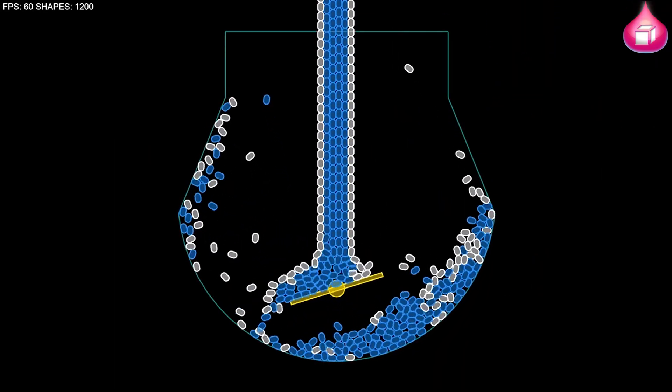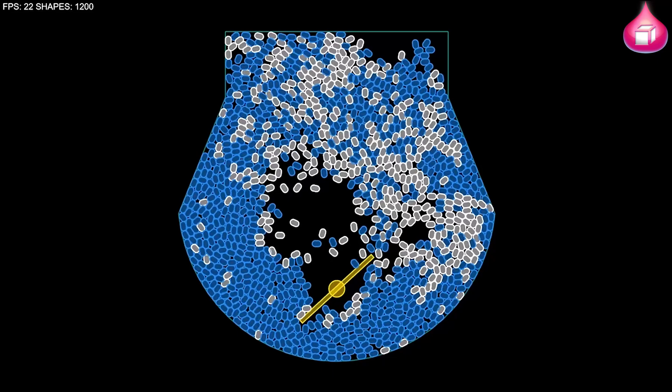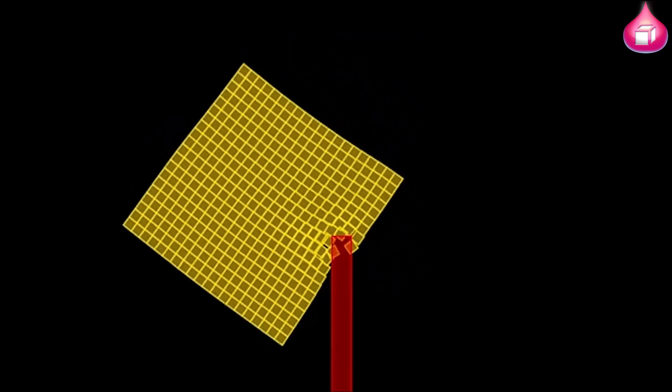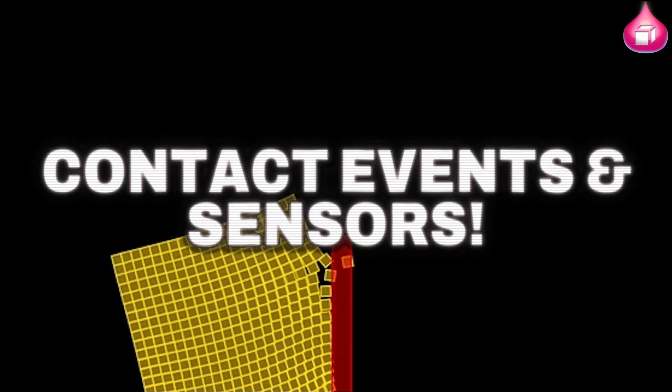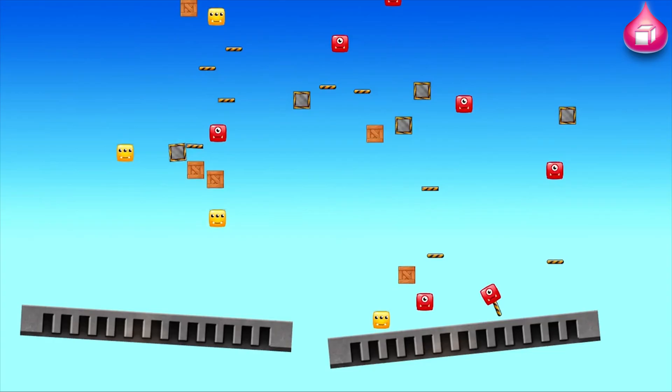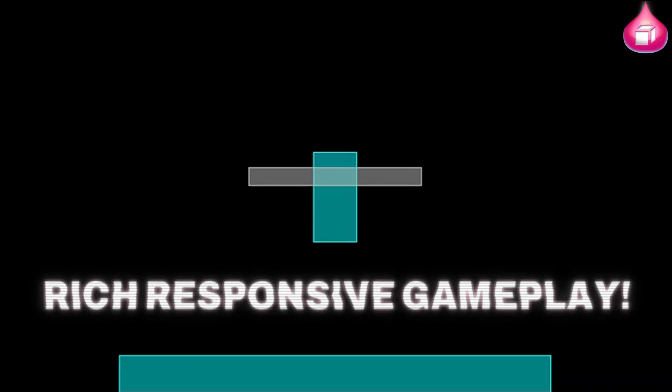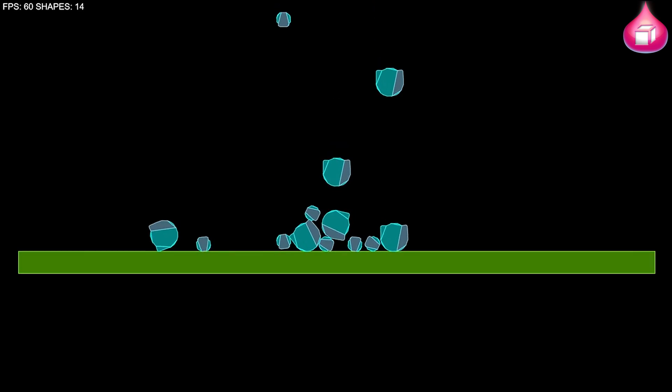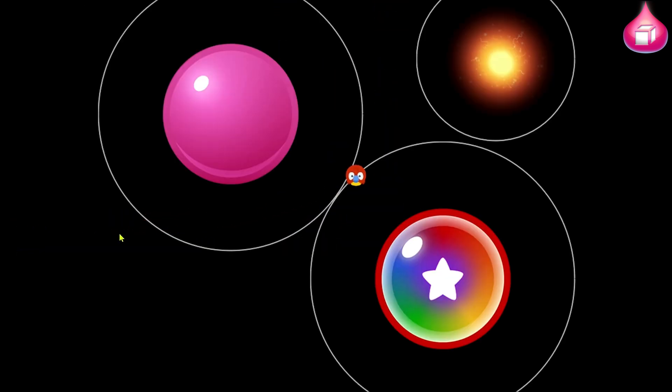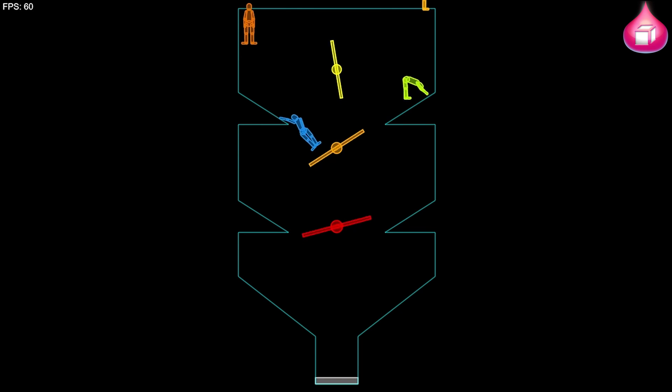It's about ensuring things not only look right, but also act predictably and naturally, reducing bugs and weird glitches. Another highlight is contact events and sensors. These tools provide detailed feedback for collision points and overlaps, enabling rich, responsive gameplay. Imagine creating detection zones that respond to player presence without blocking movement—whether it's proximity-based traps or interactive areas, sensors make those easy and reliable to implement.